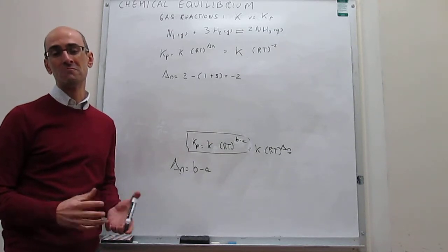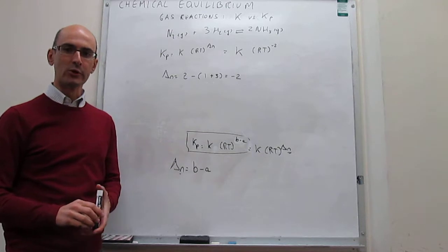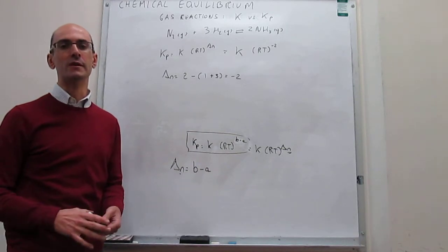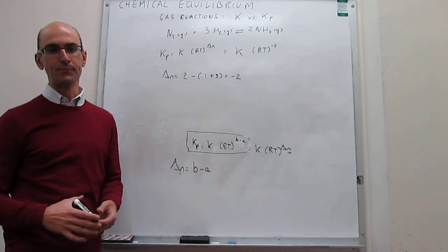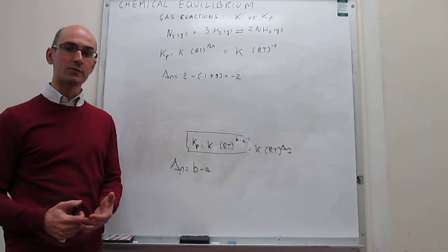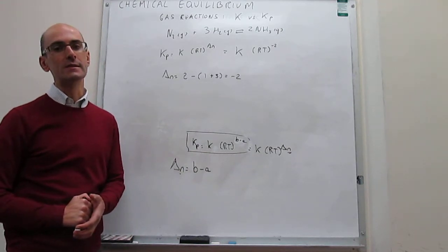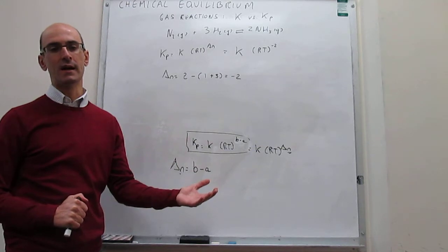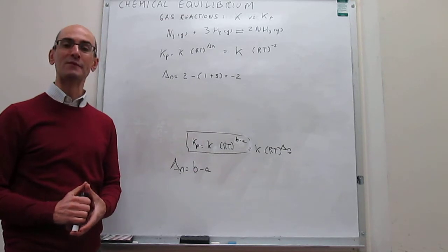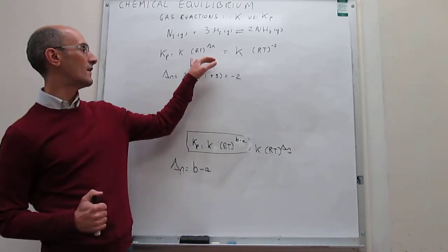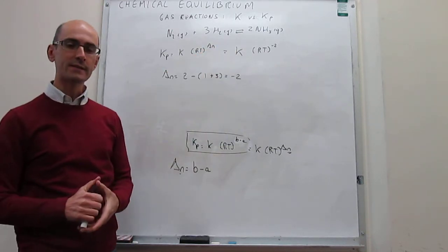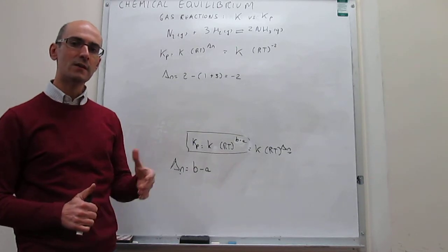In this video, we have illustrated that there are generally two ways to express the equilibrium constant for a reaction involving gases: one using molar concentrations, which is what we use for solids in solution, and another using partial pressures. For an ideal gas, molar concentration and partial pressure are directly proportional, meaning the equilibrium constant in terms of partial pressures is related to the one in terms of molar concentrations by the factor (RT)^ΔN, where ΔN is the balance of stoichiometric coefficients — products minus reagents.